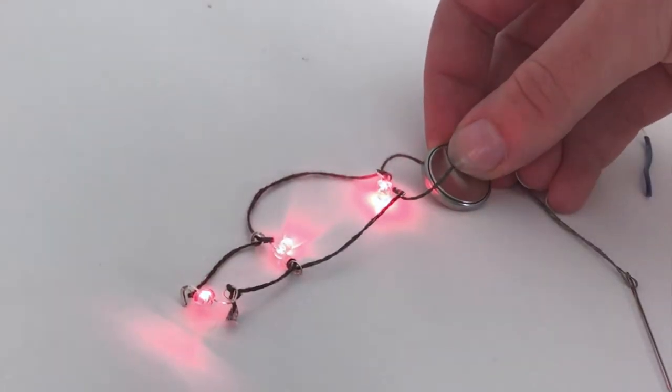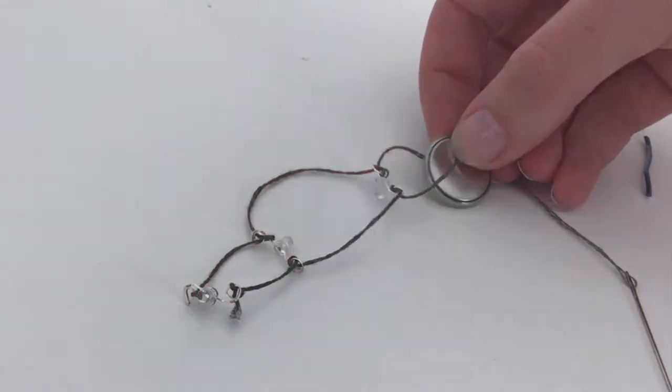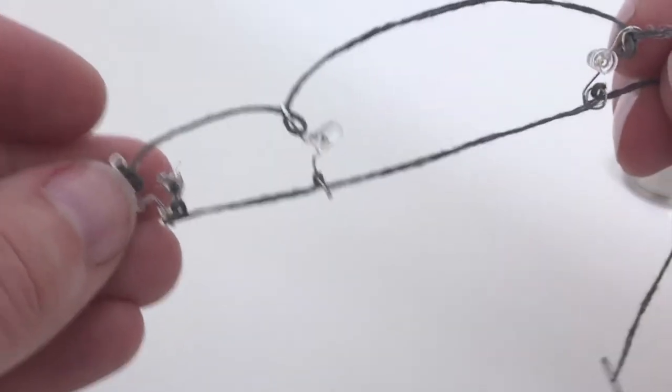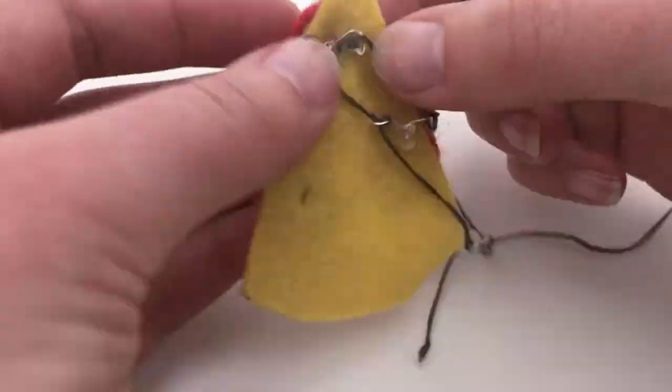Test your circuit with a coin cell battery to make sure that everything is working. If it is not lighting up, common problems can be LEDs positioned the wrong way or the thread overlapping and short-circuiting itself.